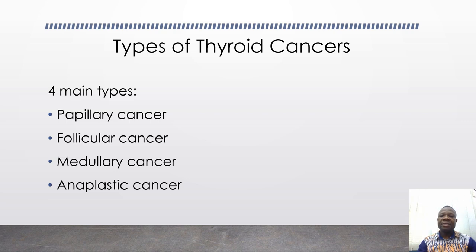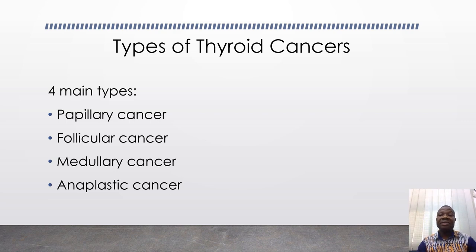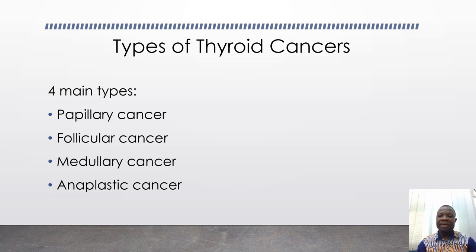Medullary cancer. This type of cancer arises from the parafollicular cells, or the C cells. The parafollicular cells produce a hormone called calcitonin, which regulates calcium balance in the body. Medullary cancers constitute about 6–8% of thyroid cancers. Because they produce high levels of calcitonin, calcitonin is used in its diagnosis, to evaluate the extent of its spread, and also for follow-up purposes.